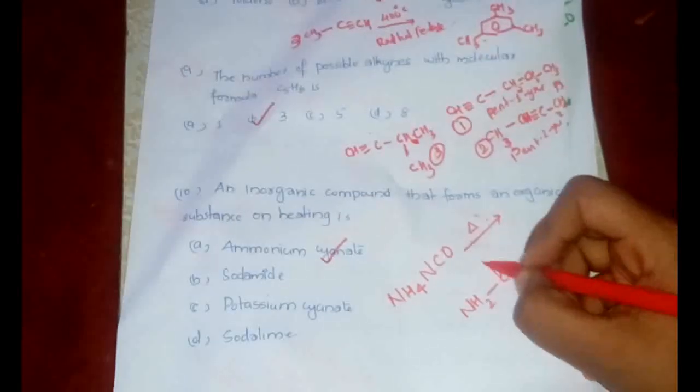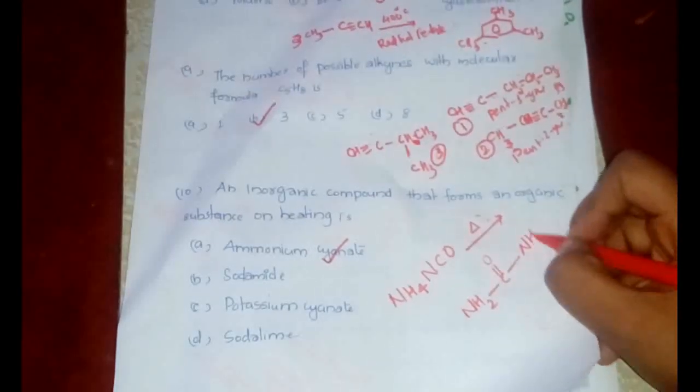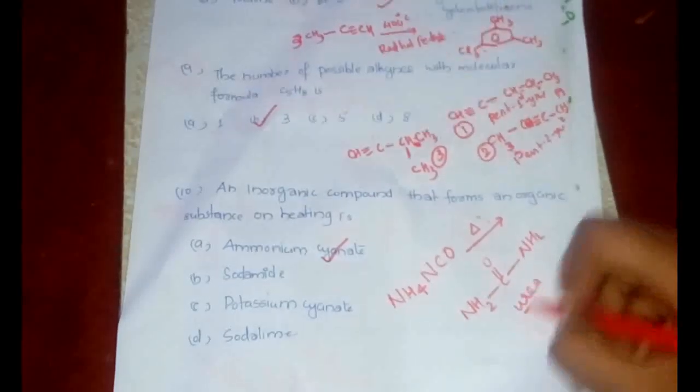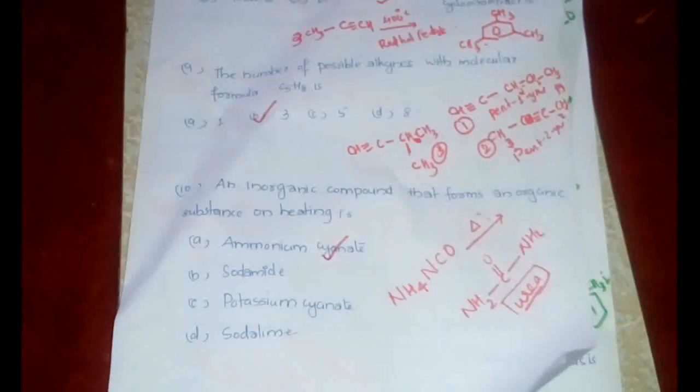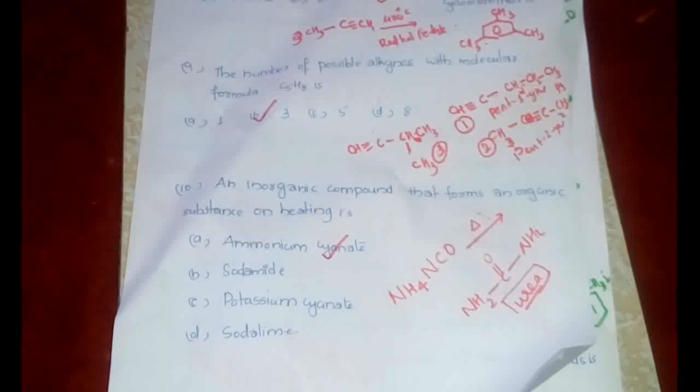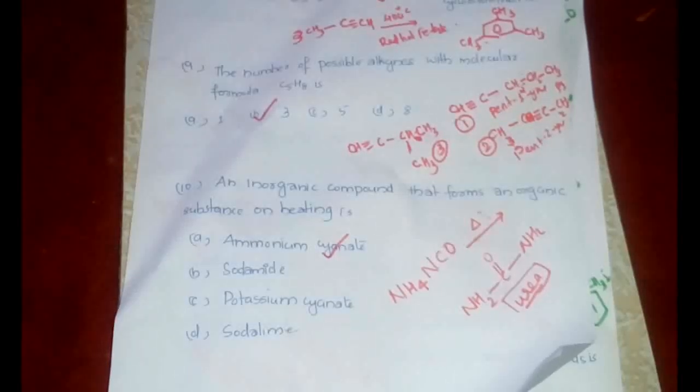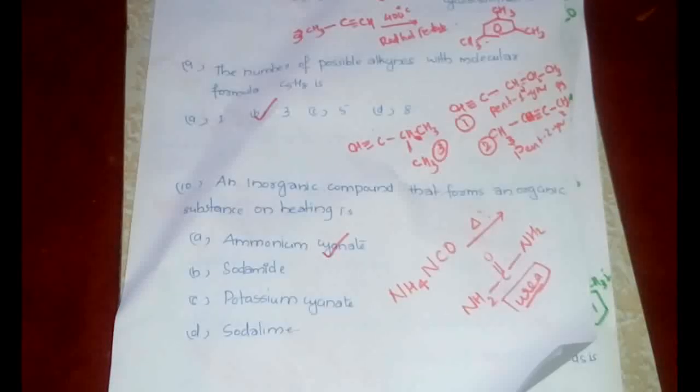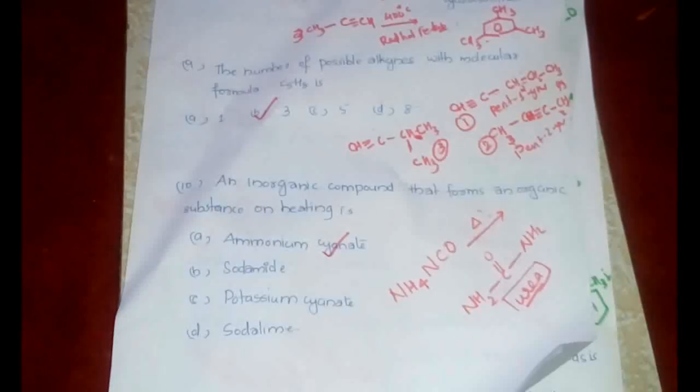Let's look at the reaction to see why it is important. Ammonium cyanide is NH4CNO. On heating, we will be getting NH2-CO-NH2, which is urea. Urea is one of the most important compounds in organic chemistry. So urea can be prepared by simply heating this particular inorganic compound, which is ammonium cyanide.